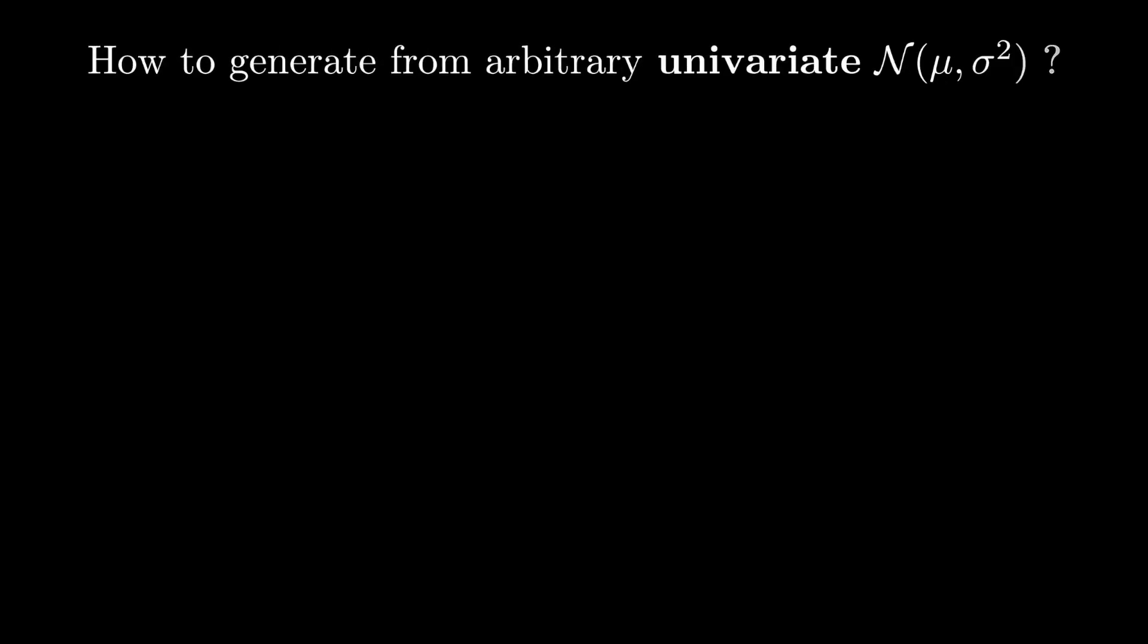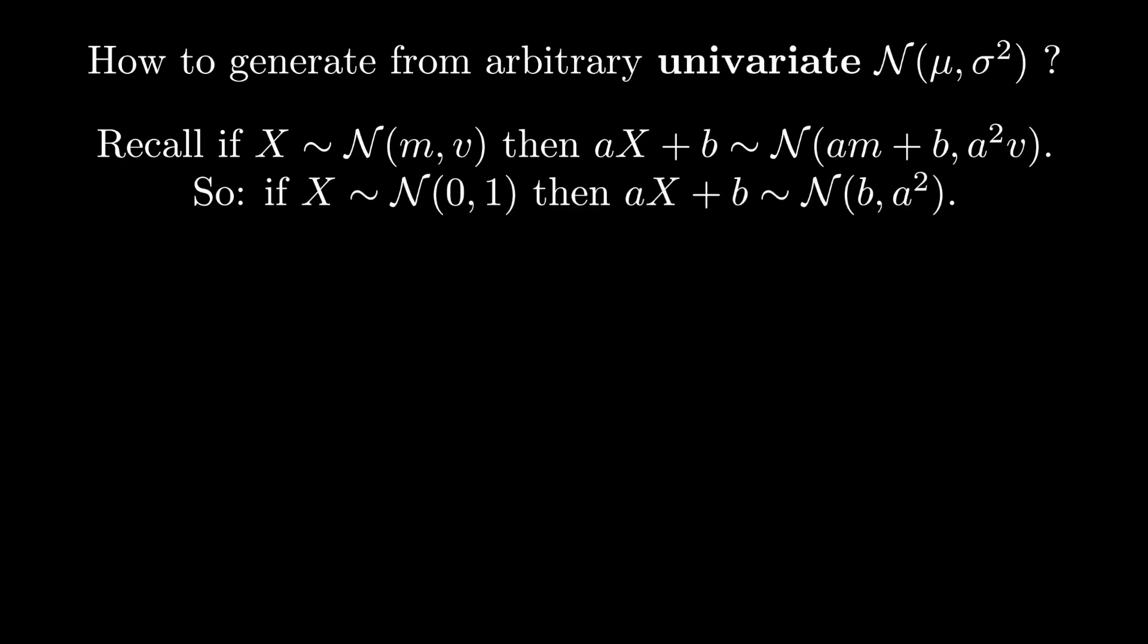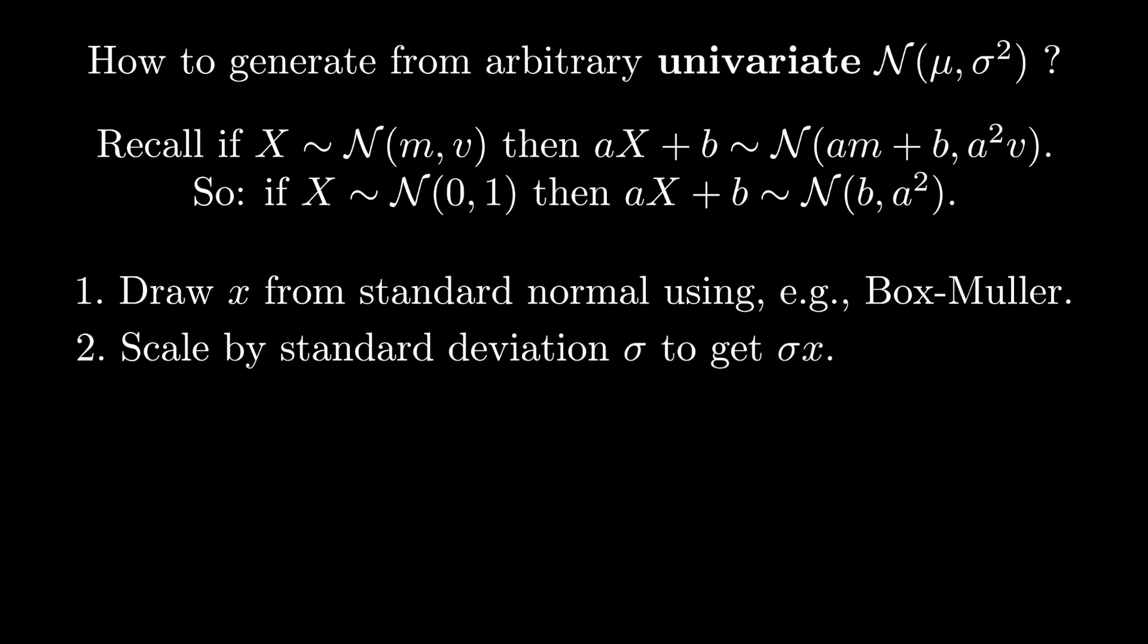Standard normal variates are the building blocks that we use to sample from more complicated Gaussian distributions. Let's look at the univariate case first. The key thing to remember is that the Gaussian distribution is closed under linear transformation. That means for a given μ and σ², we can engineer a linear transformation that takes a standard normal random variate and turns it into a random variate with that mean and variance. The procedure is pretty simple. First, get a standard normal random variate using something like the Box-Muller transform. Then multiply that standard normal random variate by σ, the standard deviation, or the square root of the variance. Finally, add on μ to get the mean you want.